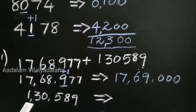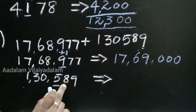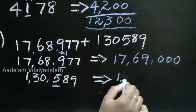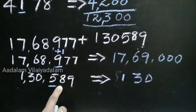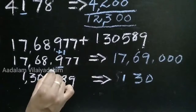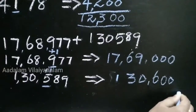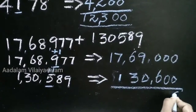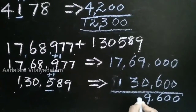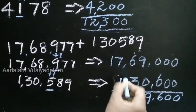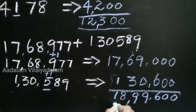Second number: 1,30,589. Round off to the nearest 100. The next digit is greater than 5. So add one number: 5 plus 1 equals 6, giving 600. Add the numbers: 0, 0, 6, then 6 plus 3 is 9, 7 plus 1 is 8, and 1. So the answer is 18,99,600.